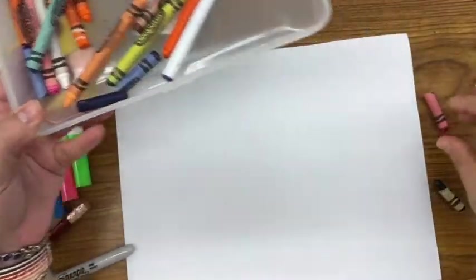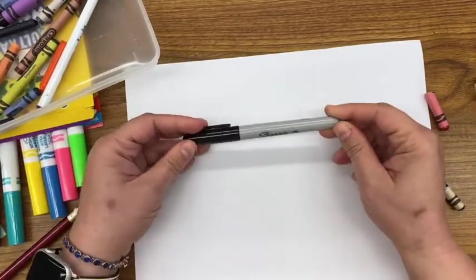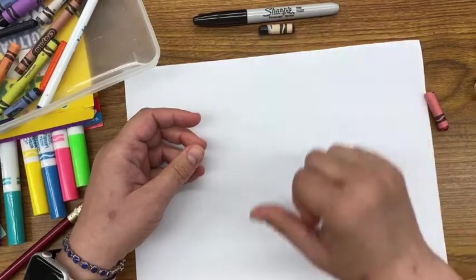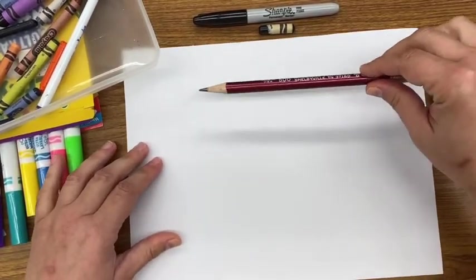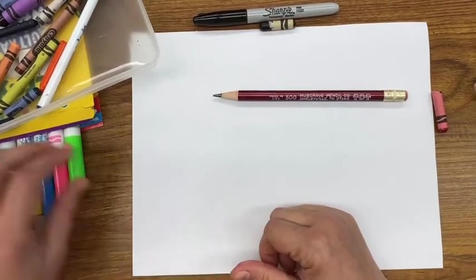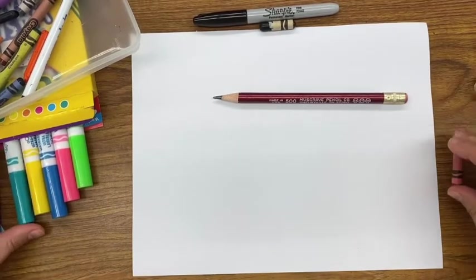You could use crayons for outlining, you can use a black Sharpie, or a crayon. You should start by drawing with pencil and drawing lightly. I will be drawing dark so you guys can see it.